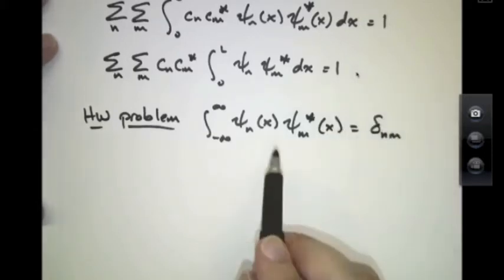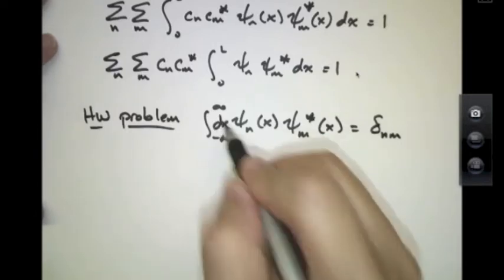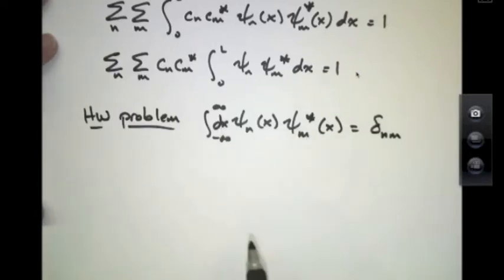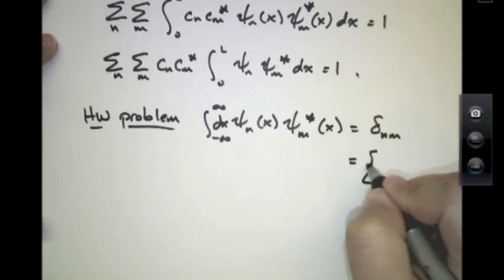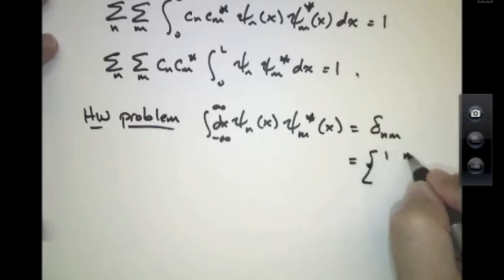That this integral over dx of ψn ψm star equals δnm. That's, in other words, equal to 1 if n equals m, and equal to 0 if n is not equal to m.